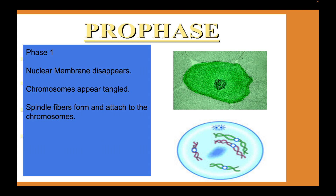After interphase, you have prophase. In prophase, the nuclear membrane disappears — this is where actual cell division starts. The chromosomes will appear, so you can differentiate chromosomes from just chromatin material, though they will appear tangled. Spindle fibers will form and attach to the chromosomes, usually at the centromeres — the middle of the chromosomes.